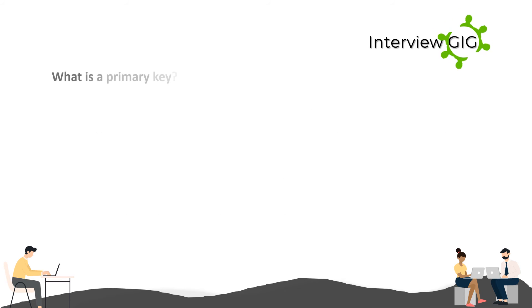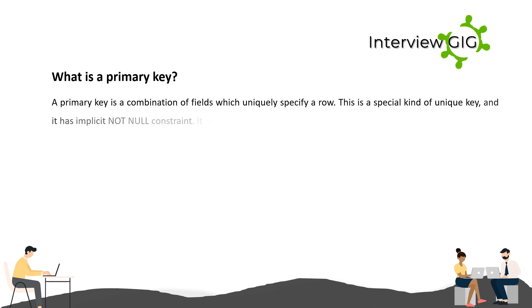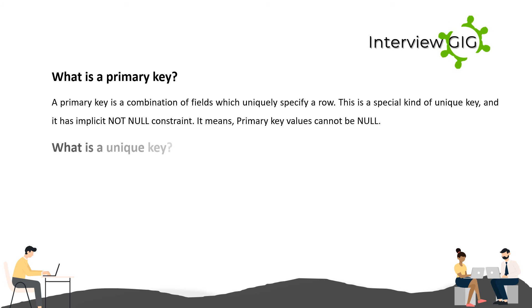What is a primary key? A primary key is a combination of fields which uniquely identifies a row. This is a special kind of unique key, and it has an implicit NOT NULL constraint, meaning primary key values cannot be null.